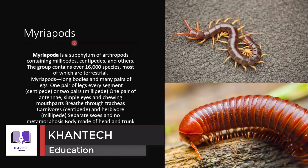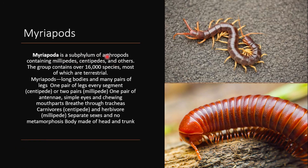The next one is Myriapoda. Myriapoda is another group of arthropods containing millipedes, centipedes, and others. The group contains over 16,000 species.